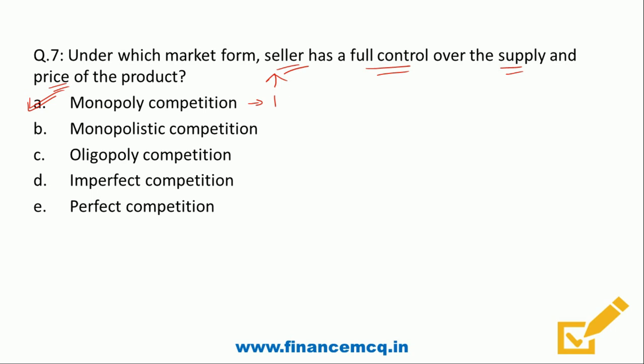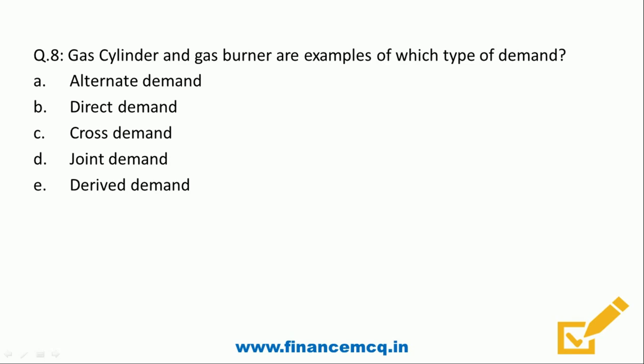Question 8: Gas cylinder and gas burner are examples of which type of demand? Option A: Alternate demand, B: Direct demand, C: Cross demand, D: Joint demand, E: Derived demand. This is a classic example of joint demand, because these two are demanded together — you don't need a gas burner without a gas cylinder and vice versa. The correct answer is Option D: Joint demand.